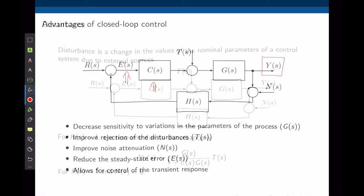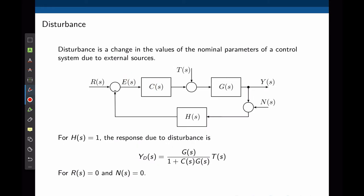In order to understand the effect of the input, the disturbance, and the noise on the output, let's model the error in this system. We start by creating three different transfer functions — one for each input: the desired input R, the disturbance T, and the noise N. For simplicity, we assume H equals 1. Starting with the disturbance, we set R to 0 and N to 0 and find the transfer function between Y(s) and T(s).